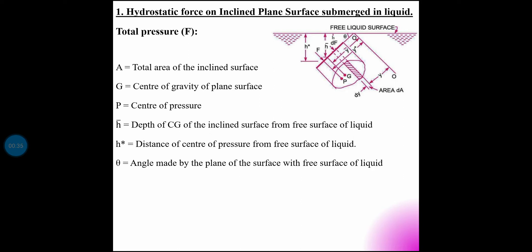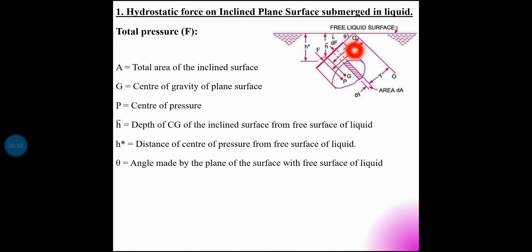Now, let us see the derivation. Here is the surface inclined at an angle theta. Consider the surface with the liquid free surface at a theta angle inclination. This is the true shape — consider the surface of arbitrary shape, true shape.